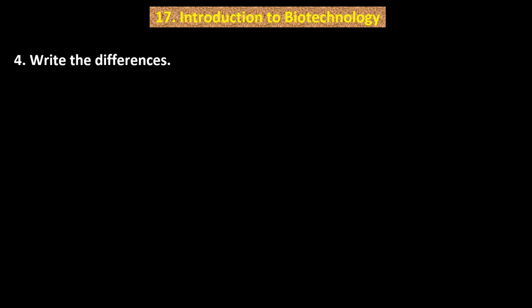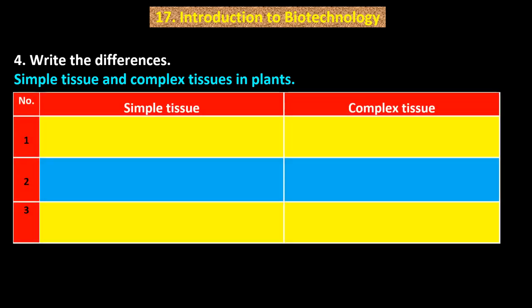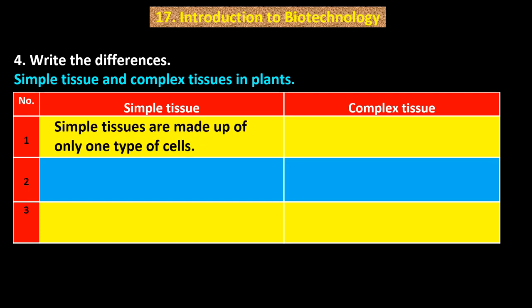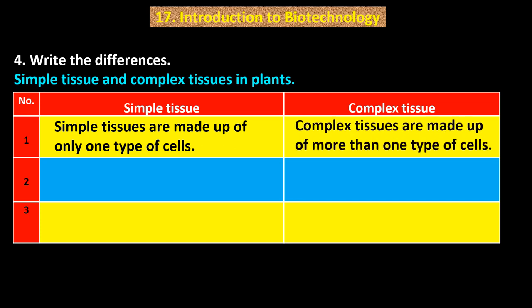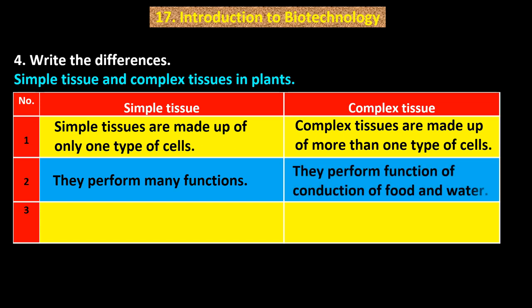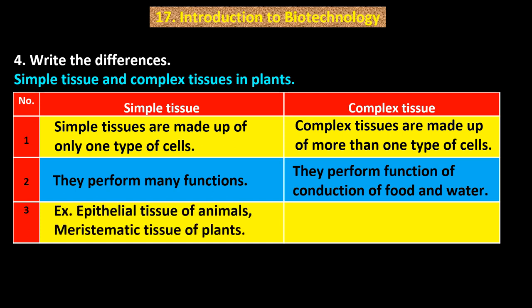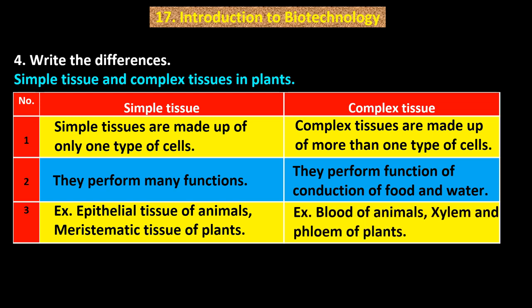Question number 4. Write the differences between simple tissue and complex tissues in plants. Simple tissues are made up of only one type of cells and perform many functions. Complex tissues are made up of more than one type of cells and perform the function of conduction of food and water. Examples: simple tissue — epithelial tissue of animals, meristematic tissue of plants; complex tissue — blood of animals, xylem and phloem of plants.